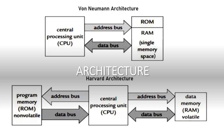It was named after John von Neumann, which is why this architecture is called von Neumann or Princeton architecture. In this von Neumann architecture, the instruction and the data are stored in a single memory — that is the RAM and ROM — connected to the CPU and input-output devices through a common bus. The CPU executes instructions by fetching data from memory, decoding it, and then executing it.